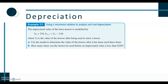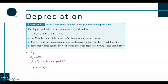Part a: use the model to determine the value of the mower after it has been used three times, so we want V3. V0 = 2700, V1 = 2700 − 3.50 = 2696.50, V2 = 2696.50 − 3.50 = 2693, V3 = 2693 − 3.50 = $2,689.50.